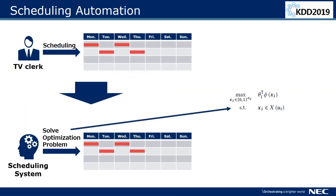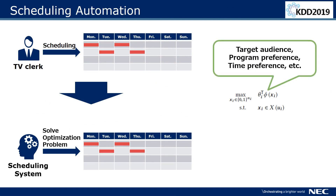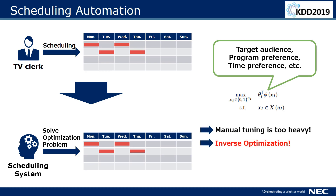One approach to automate TV ad scheduling is to develop an appropriate mathematical optimization problem. However, the objective function contains a lot of parameters which relate to slot preferences or conflicts among others. To tune such parameters automatically, we apply a data-driven approach. Specifically, we use inverse optimization.